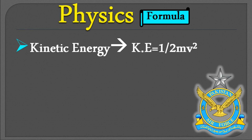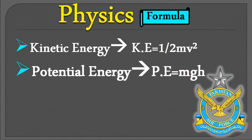Kinetic energy کا formula ہے KE = ½mv²۔ کسی بھی energy کا unit جاول (Joule) ہوتا ہے — چاہے chemical energy ہو، wind energy ہو، یا elastic potential energy۔ Potential energy کا formula ہے PE = mgh۔ یہ دونوں energies آپس میں equal ہو سکتی ہیں۔ Kinetic energy کی definition: energy due to motion۔ Potential energy کی definition: energy due to position۔